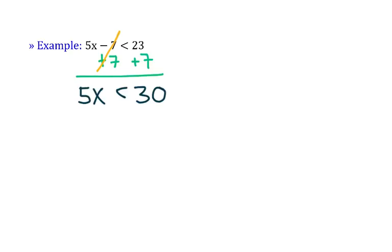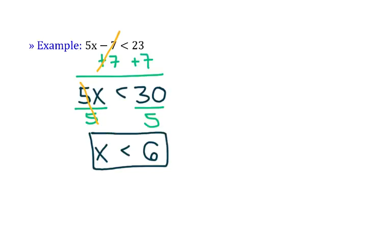5x is less than 30 means that 5 is being multiplied by x, so we'll undo multiplication by division, and we'll do it to both sides. So now we have x all by itself on the left hand side, and 30 divided by 5 gives us 6. So the solution to this inequality is x is less than 6.